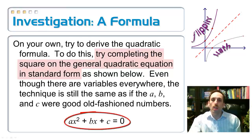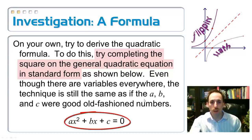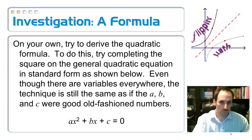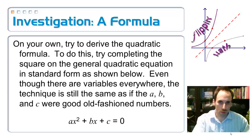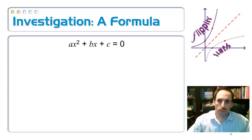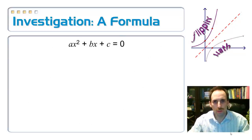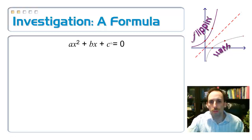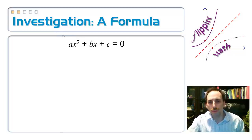You complete the square just like you would ordinarily with numbers — it's just that now you have variables a, b, and c. Give it a try, and then hit pause. Let's go through that process together. Completing the square: obviously I've got to get the c over to the right side, and just like the previous example, I'll go ahead and divide everything by a.